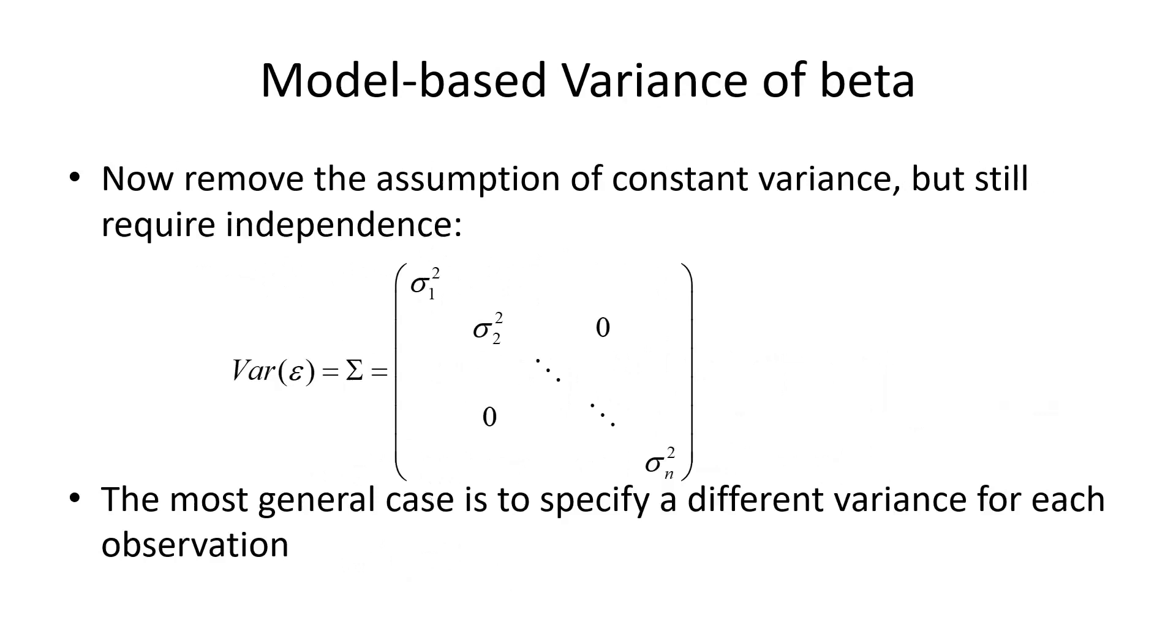The independence assumption implies that the off diagonals must be zero, right? If it's independent, then it must be uncorrelated. But we're making no assumption on the diagonal. The most general case means that they're all different.